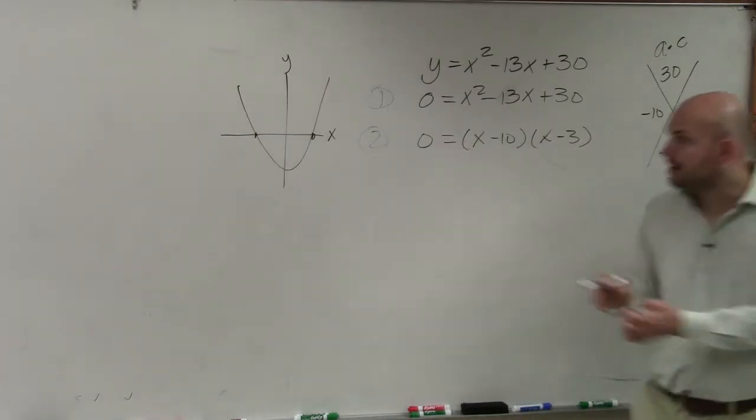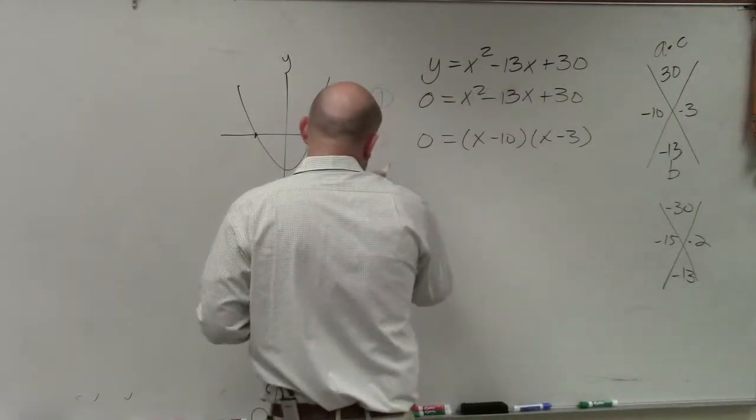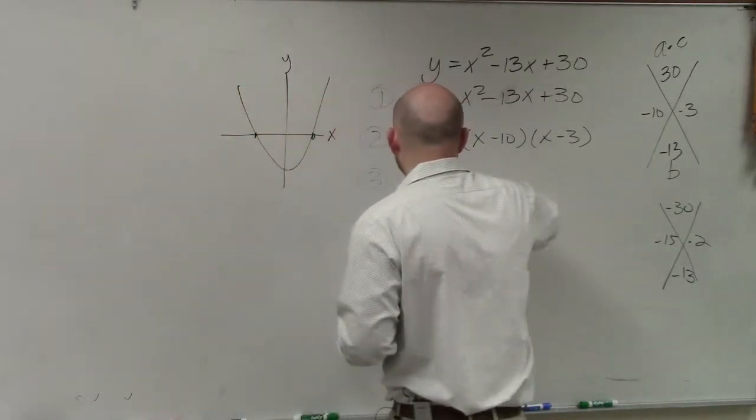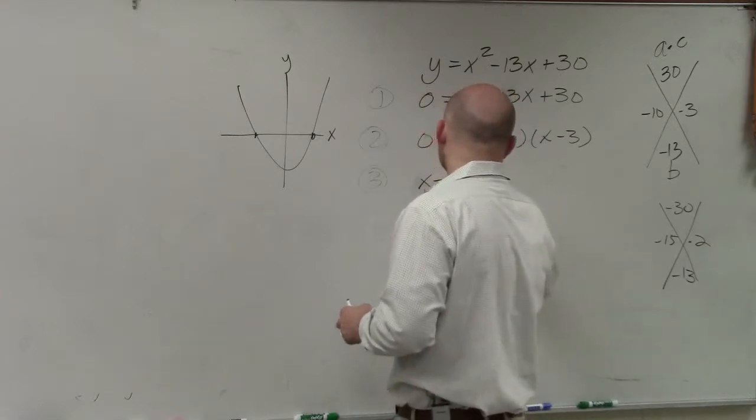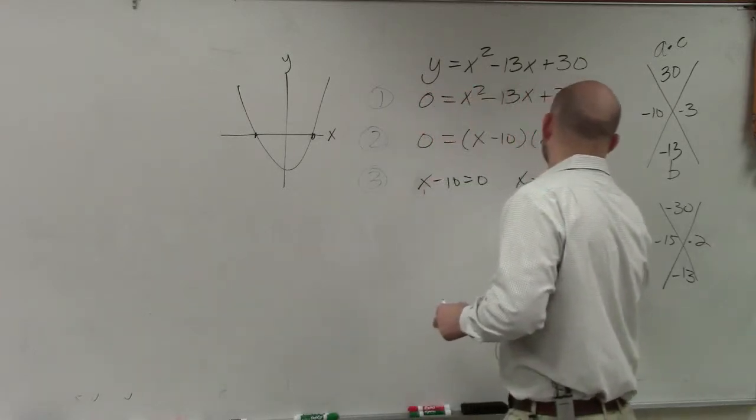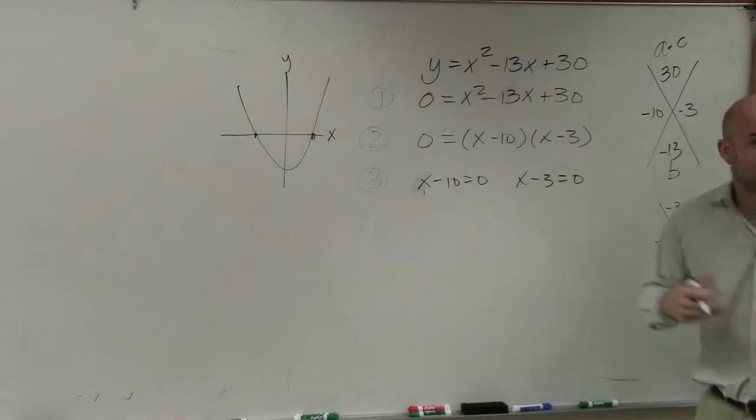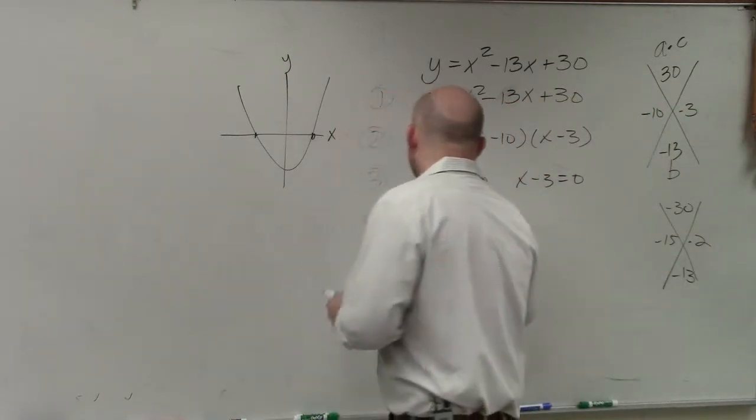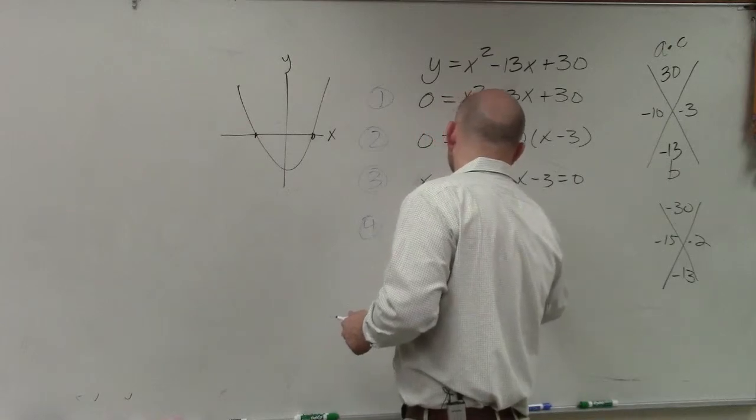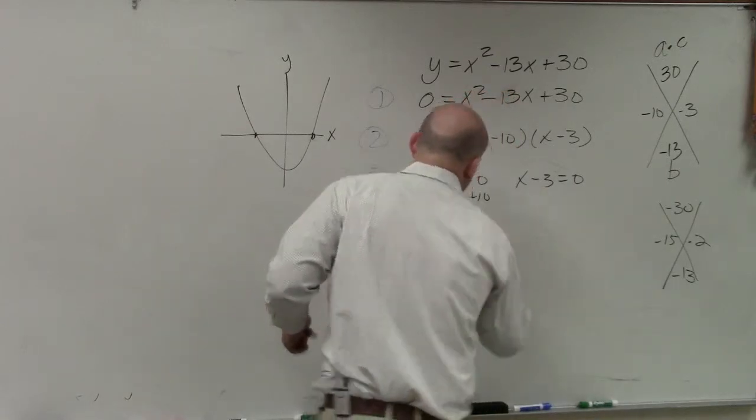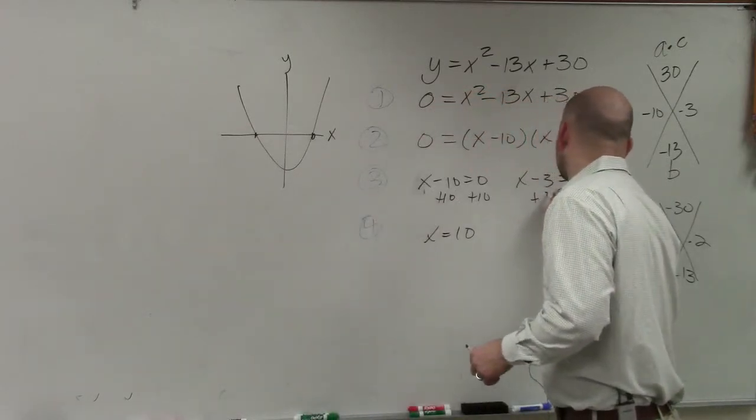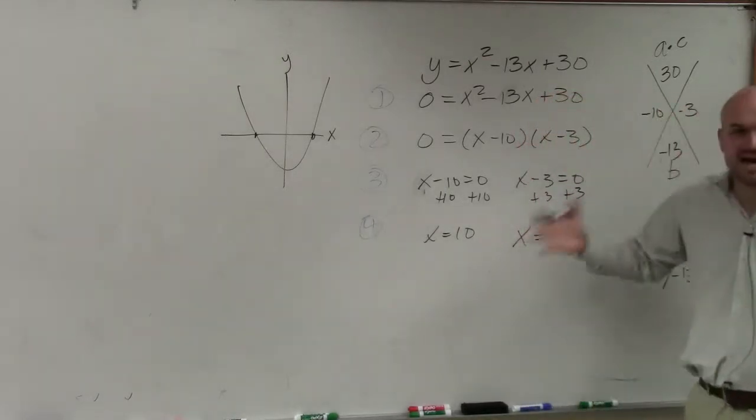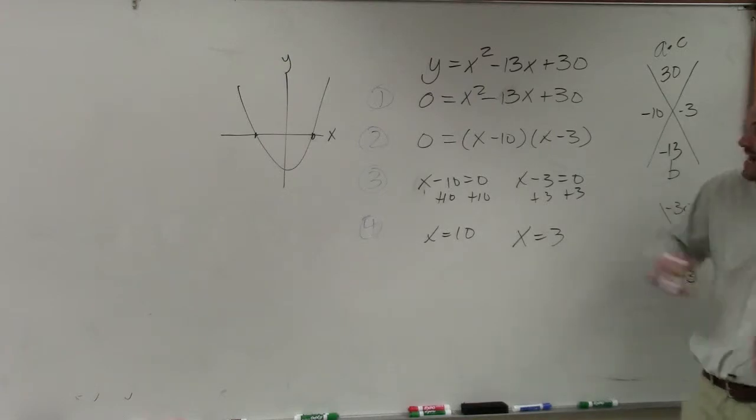Then step 3 was to apply the 0 product property. So we set each of my factors now equal to 0. And then step 4 is solve.